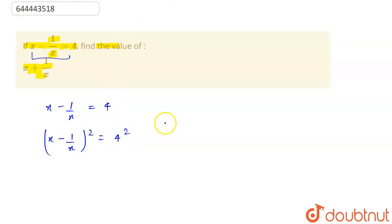So we can open this by applying the formula a minus b squared is equal to a squared plus b squared minus 2ab.